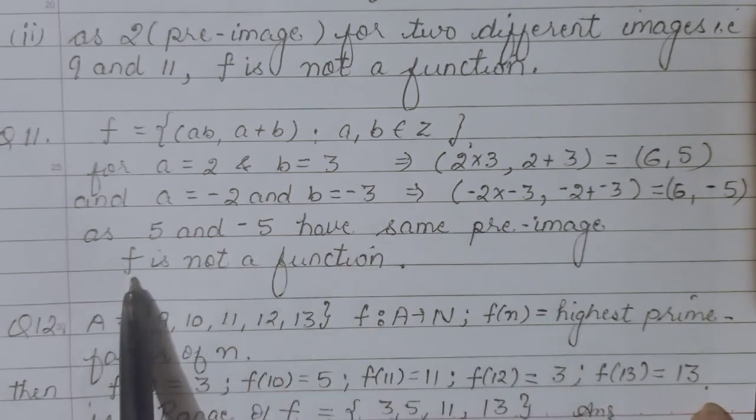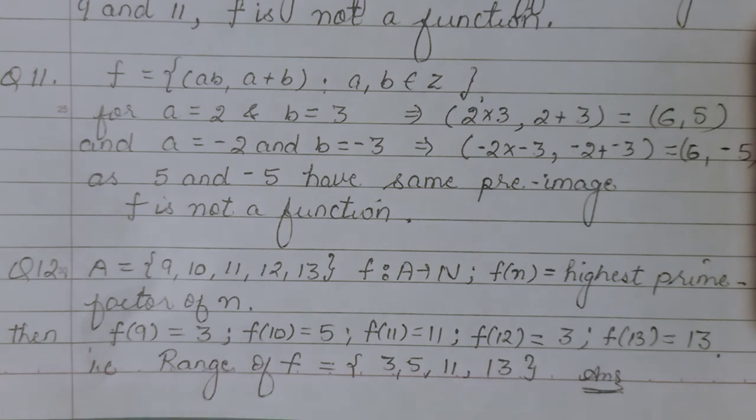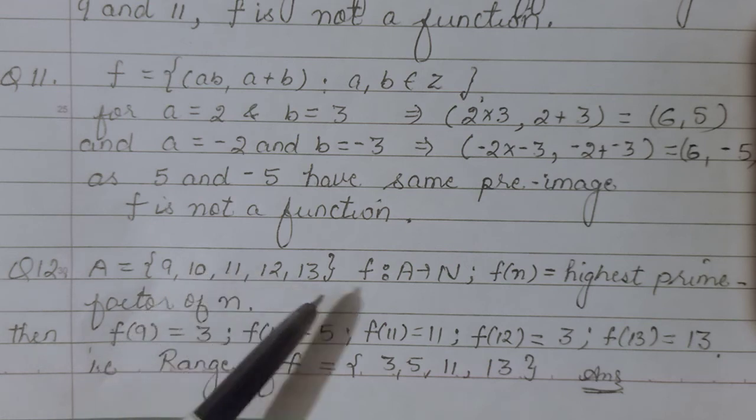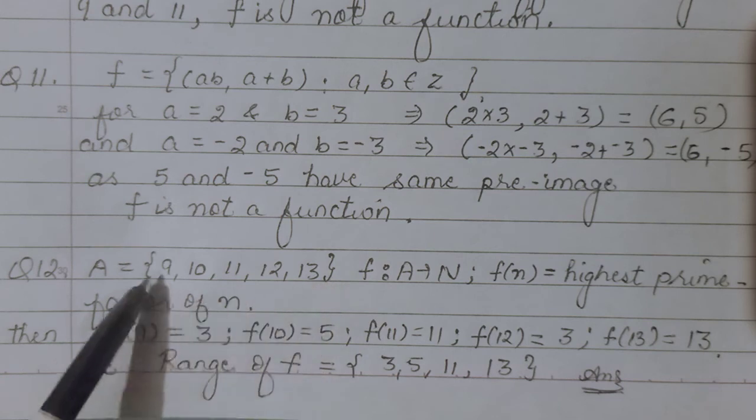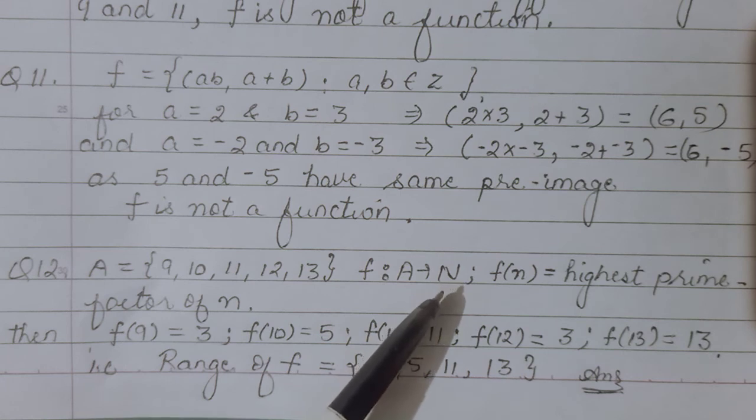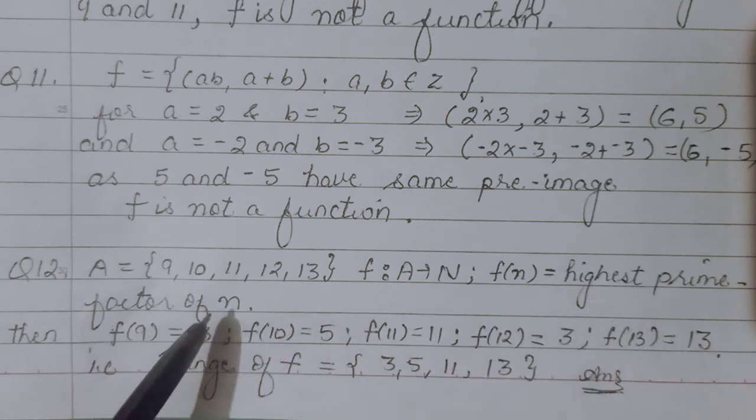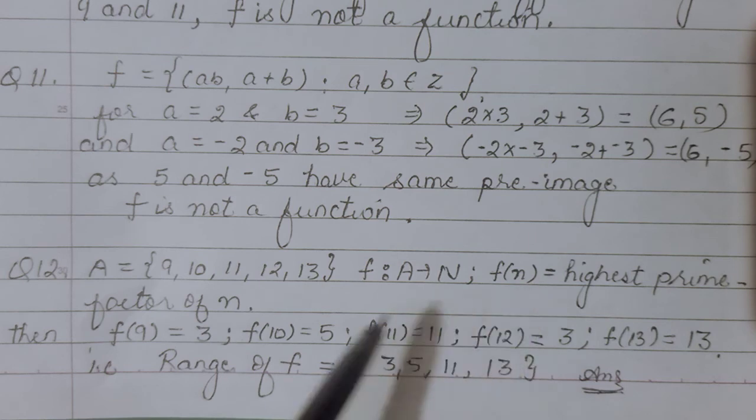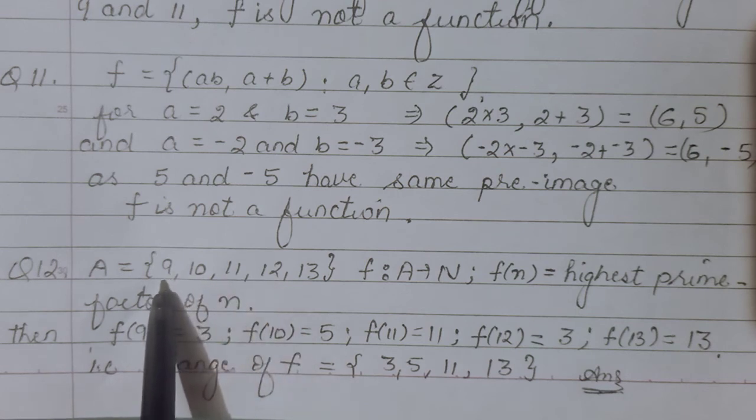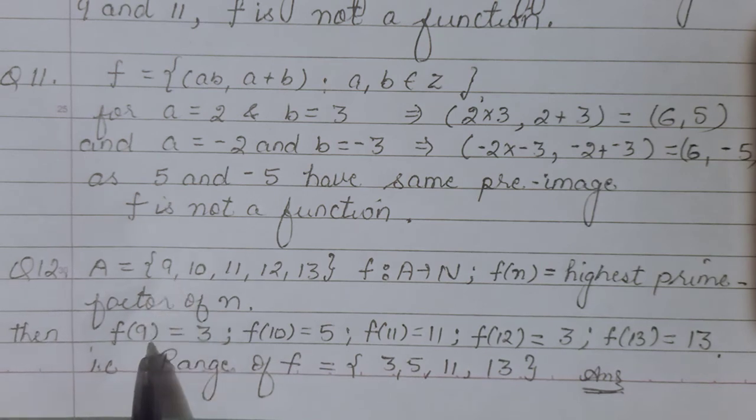The last question: set A is given as {9,10,11,12,13}. The function is defined from this set A (domain) to natural numbers (co-domain). Range will be subset of natural numbers. The image f(n) is the highest prime factor of n. The entries of n will be from set A.